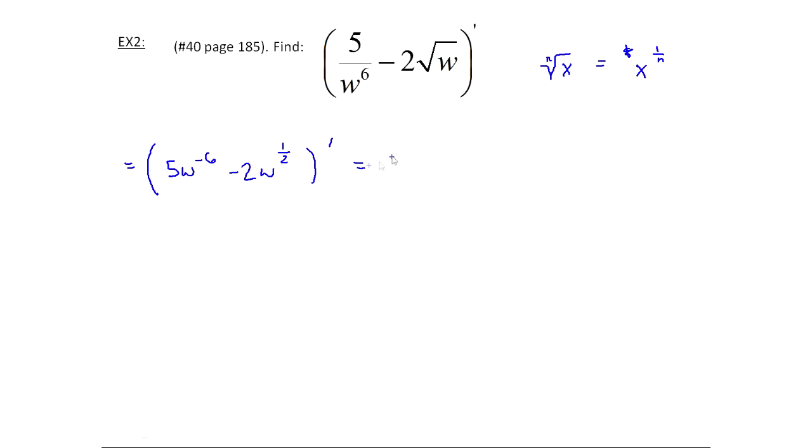I'm going to take the derivative of this now. So I keep the 5, bring down the minus 6, keep the w, and subtract 1 off the minus 6. Here, keep the minus 2. That's that rule that says constants can come out, so I'm just leaving it. Bring down the one-half, keep the variable, and subtract 1. One-half minus 1 is minus one-half.